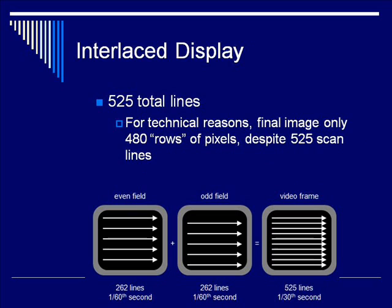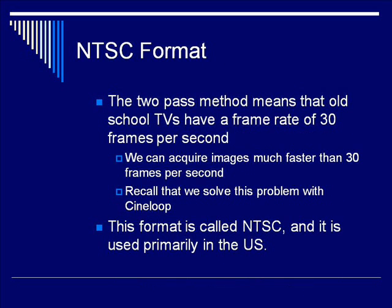Each frame consists of 525 total lines. For technical reasons, the final image only has 480 distinct rows of pixels that we would talk about being stored in memory, despite having 525 scan lines. This two-pass interlaced display of 525 lines displaying 480 rows of pixels is called the NTSC format, and it's used primarily in the United States.